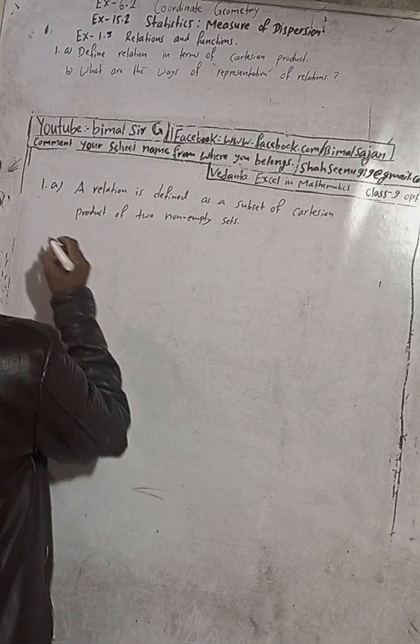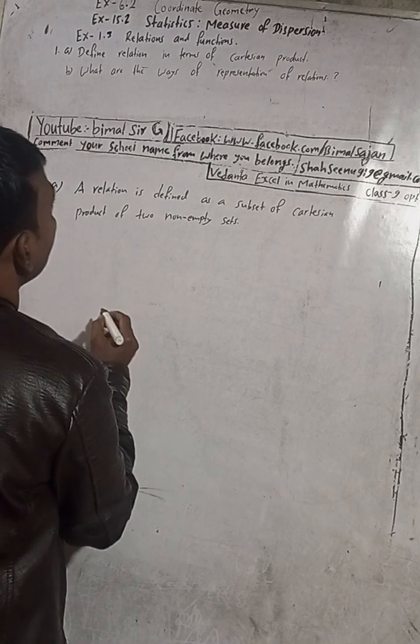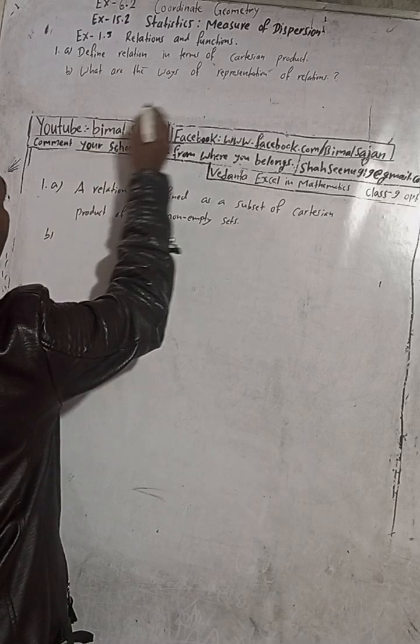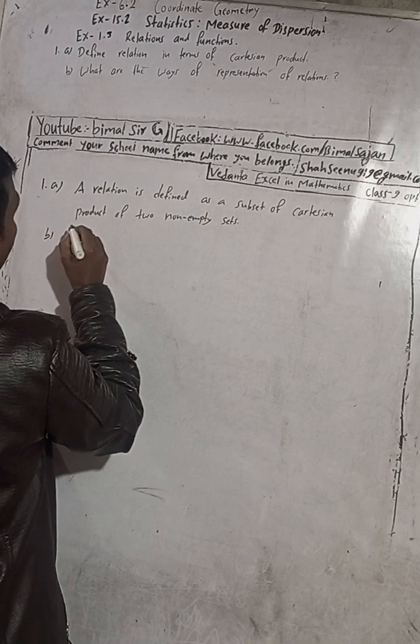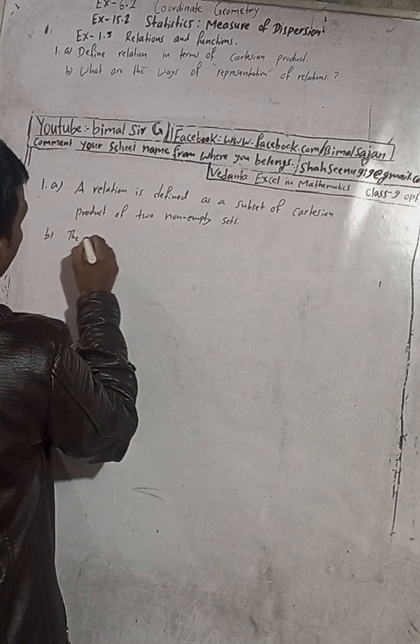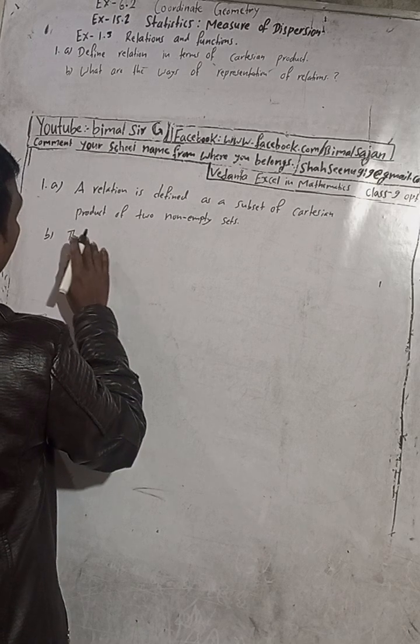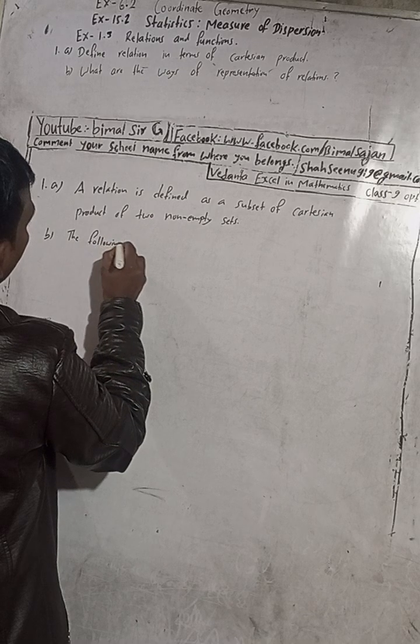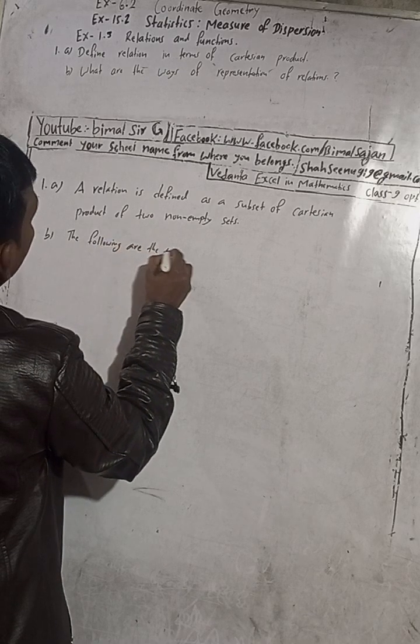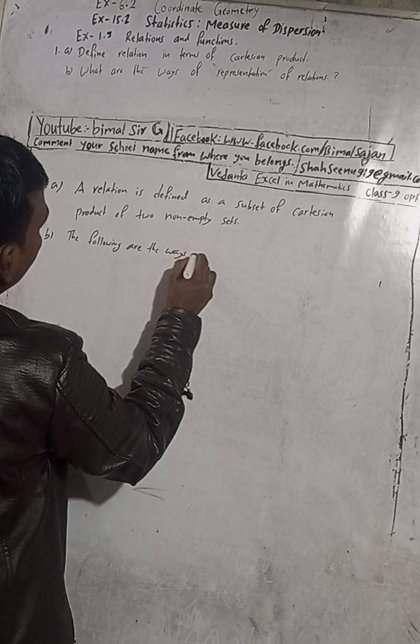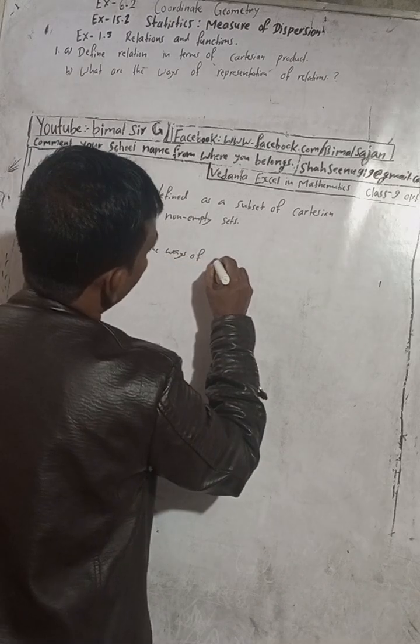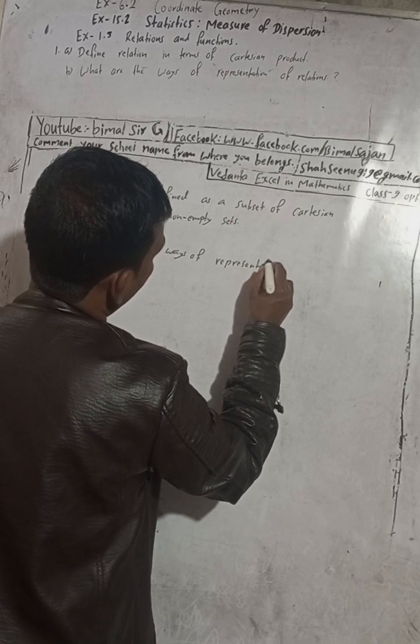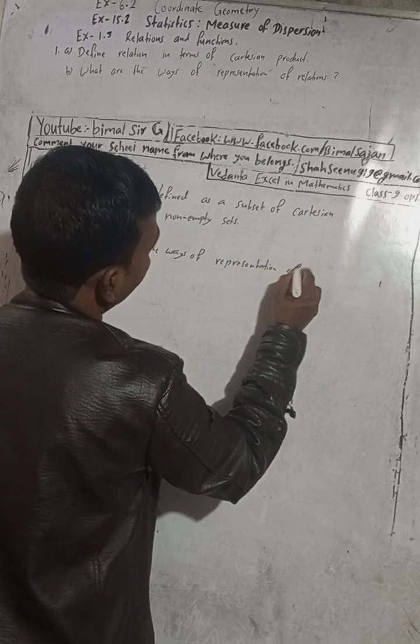Okay, now part (b). What are the ways of representation of relations? You can write here: the following are the ways of representation of relations.